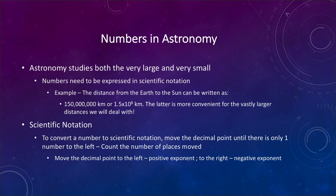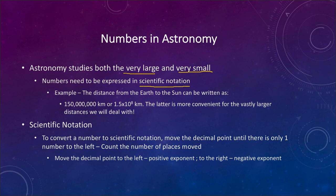Let's start off looking at numbers. What are some of the numbers in astronomy? One of the difficulties is that in astronomy we have both very large and very small numbers, and because of that we express those numbers in what we call scientific notation in order to make them easier to write out. An example: the distance from the Earth to the Sun can be written as 150 million kilometers — a very big number with lots of zeros to write out and keep track of.